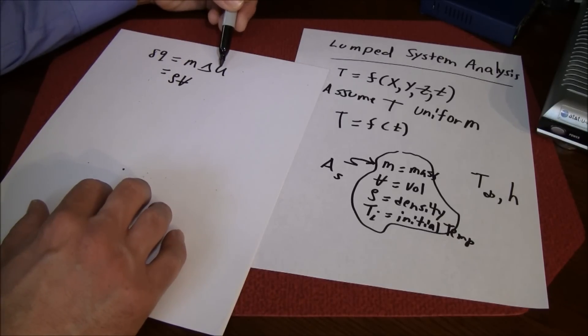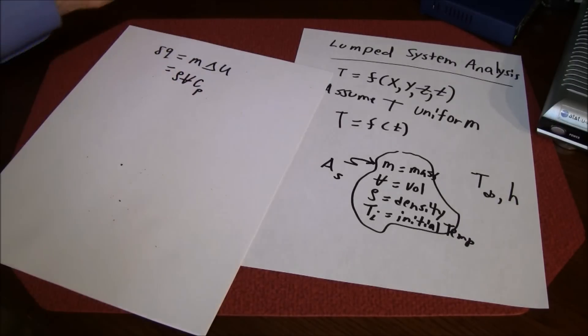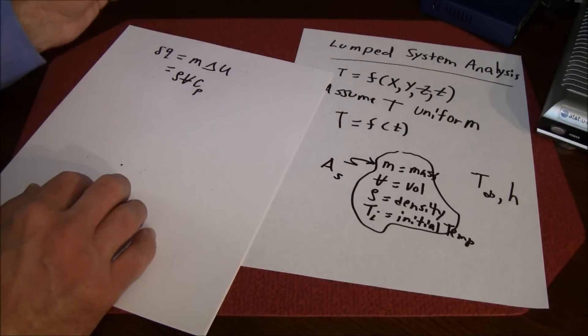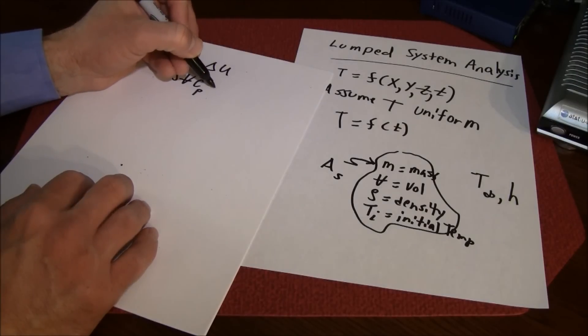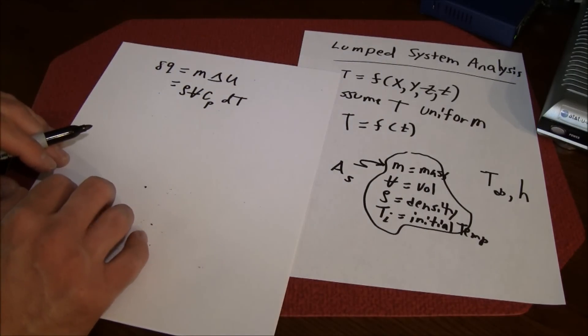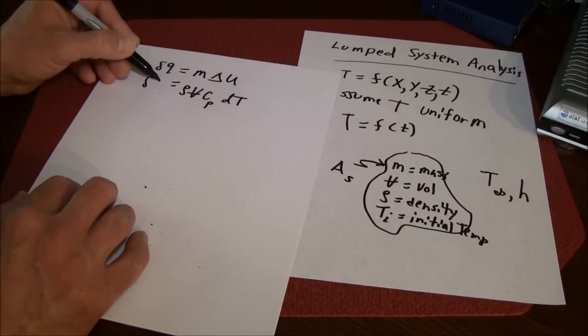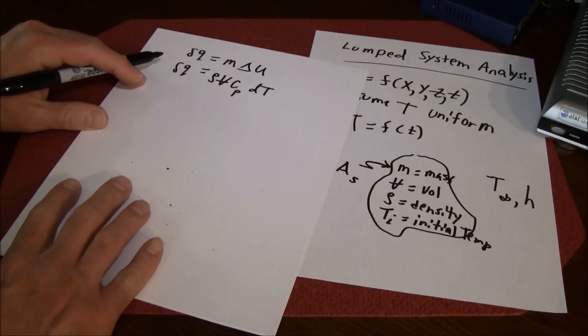If you recall from thermo, if it is an incompressible substance, we can rewrite the delta u as c delta T. People usually just call it c sub p, but c sub p is equal to c sub v for an incompressible substance so it doesn't really matter. We can write delta u as c delta T, that's from thermo.